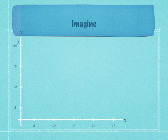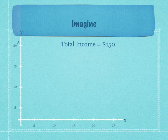So let's imagine two products, X and Y. Total income is $150. The price of X is $15. So if the consumer spends all their money on X, they can buy 10 of X. $150 divided by 15.